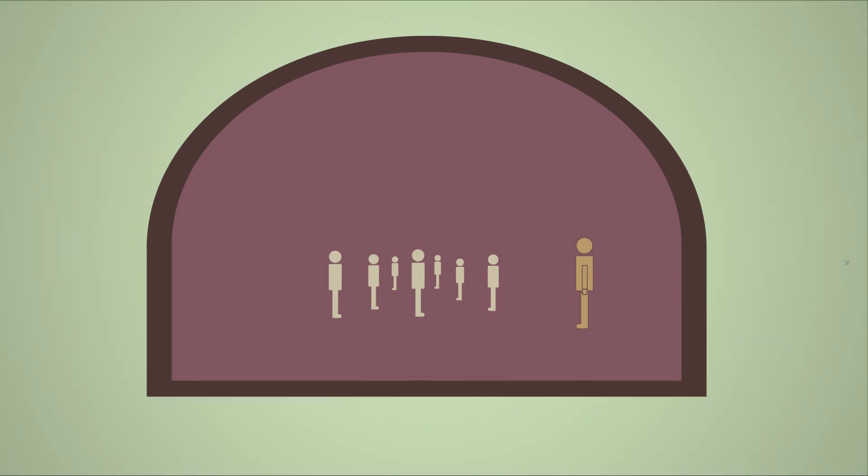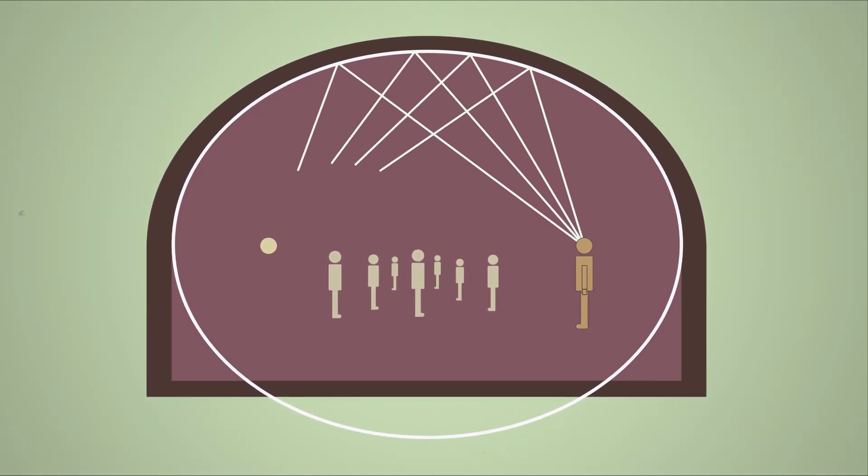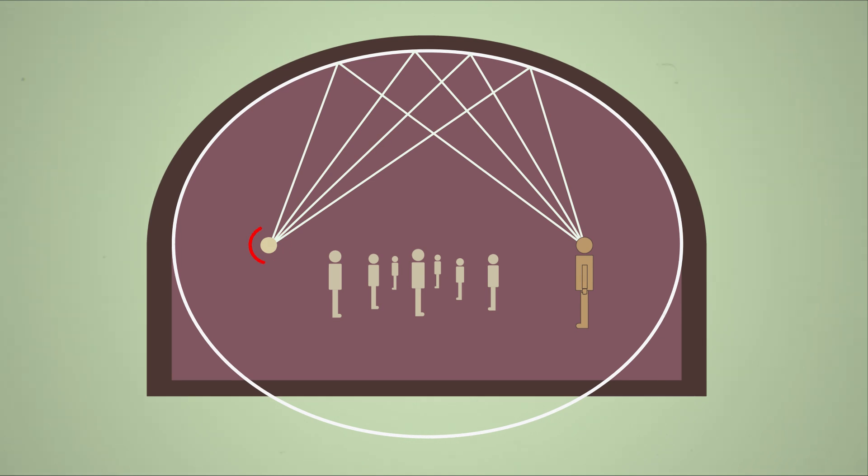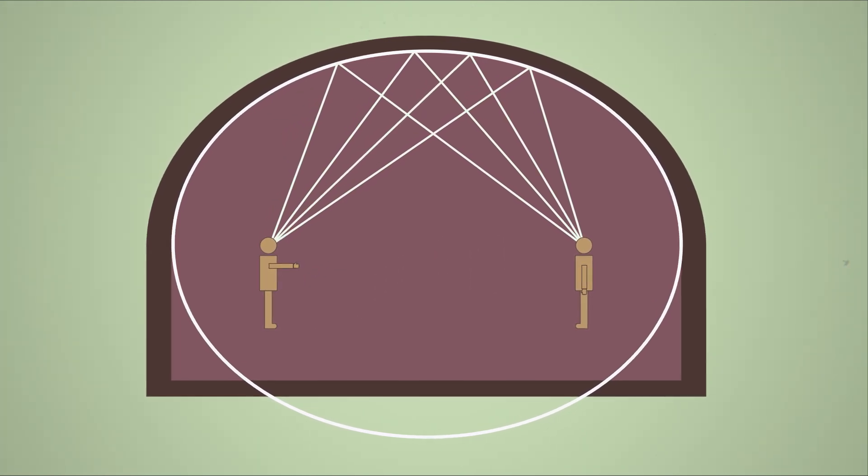In a whispering gallery, the shape of the dome is elliptical. When a person whispers at one focus of the ellipse, all the sound waves are reflected from the ceiling and converge at the other focus. This means that only someone standing at the opposite focus can hear the whisper clearly, creating a sort of secret communication channel.